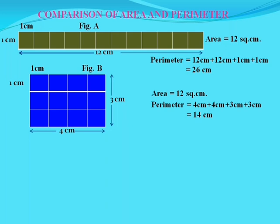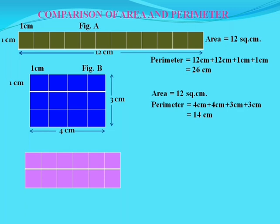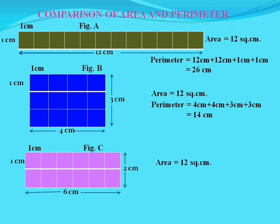Now these 12 squares can be arranged in yet another different manner. Each square has a side of 1 cm. The length of this rectangle is 6 cm and the breadth is 2 cm. So the area of this rectangle is also 12 square cm.